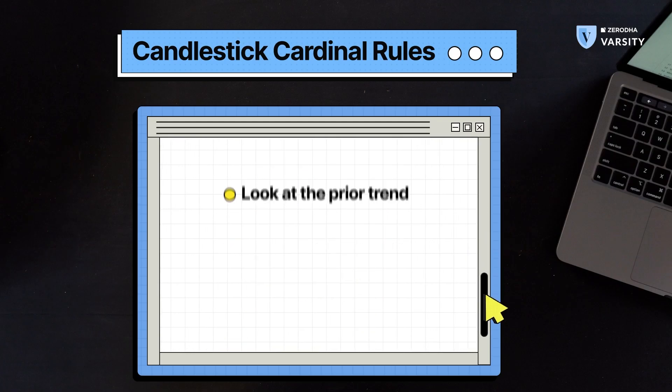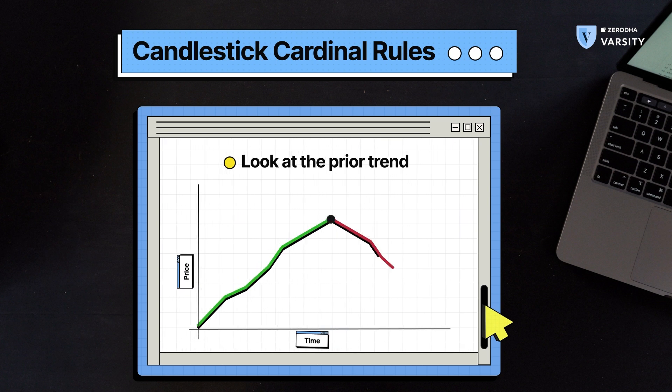And finally, we have look always at the prior trend. So this also means context. If we think that a certain pattern is bullish, it will mean something completely different in an uptrend. And it may mean something completely different in a downtrend.